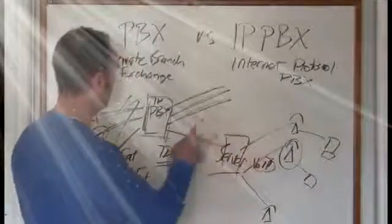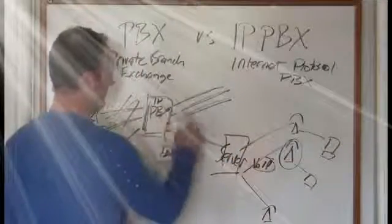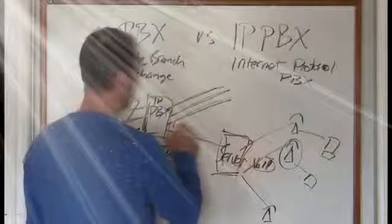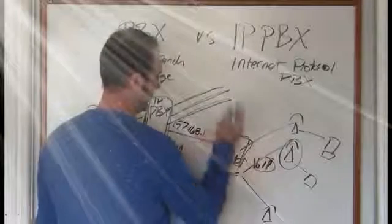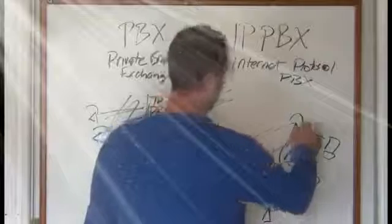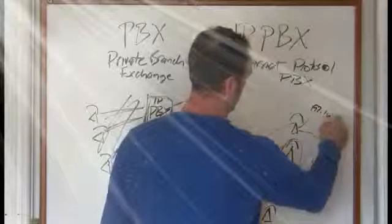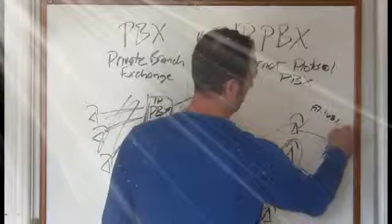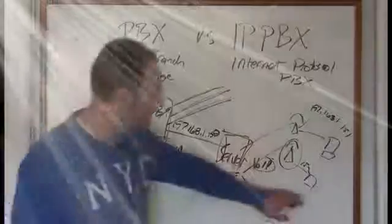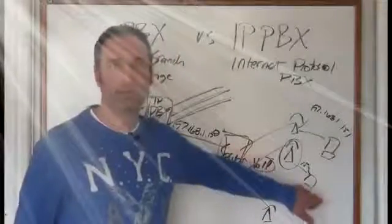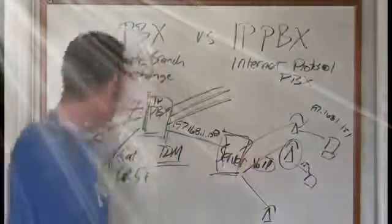But for the sake of this, your IP PBX is going to be on the LAN. It's going to give it an IP address 192.168.1.whatever, you know, 150 say. And then all of these are going to have IP addresses 151, 152, so forth and so on. And then your computers, those are going to have IP addresses too.